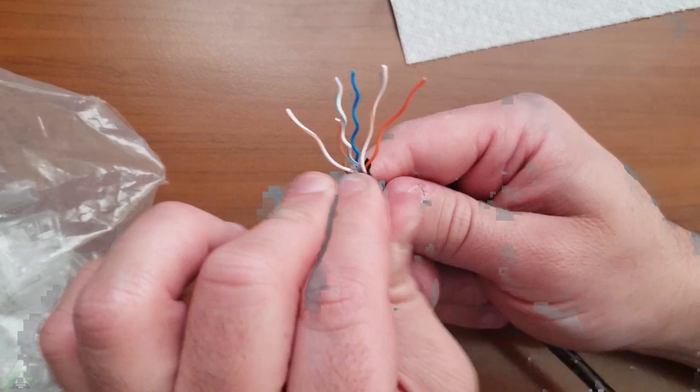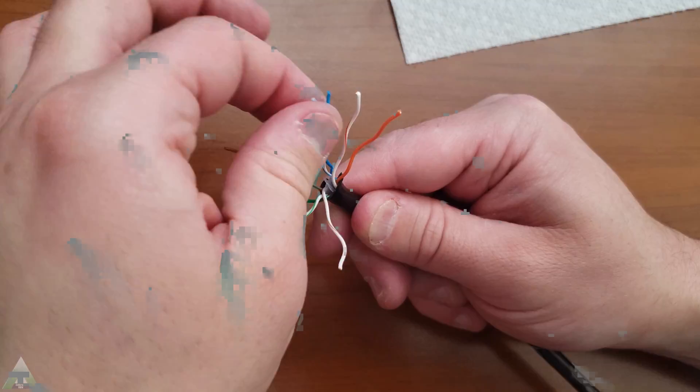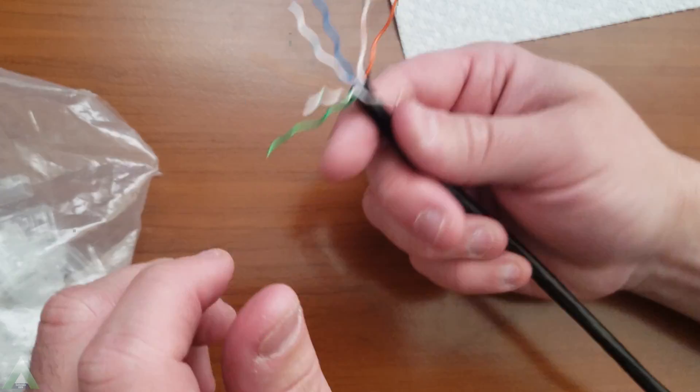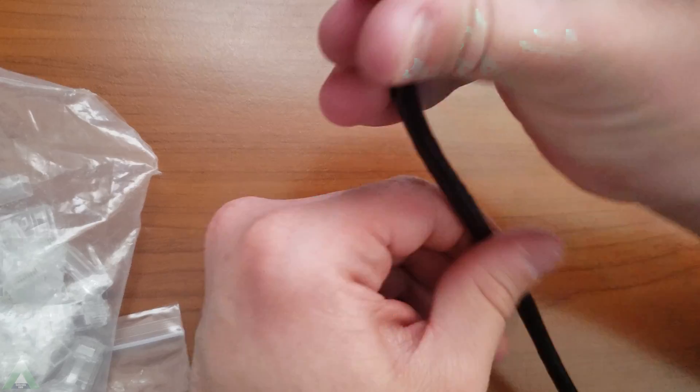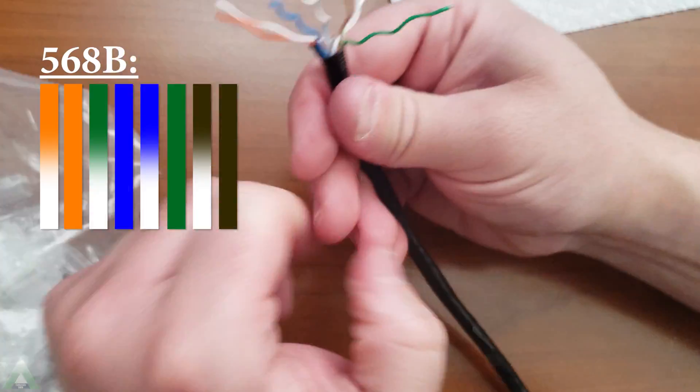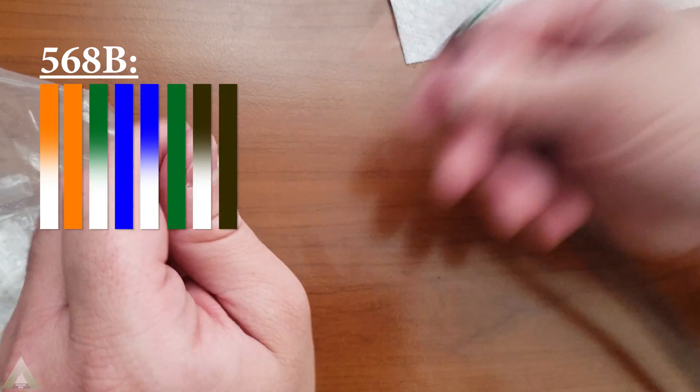Now there are a couple of schemes you probably already saw online on how to coordinate it together. Pick one. There is 568B, 568A. Doesn't matter. We'll be using 568B here but pick the one that you want.